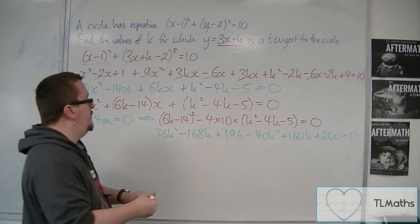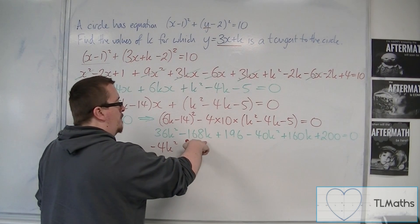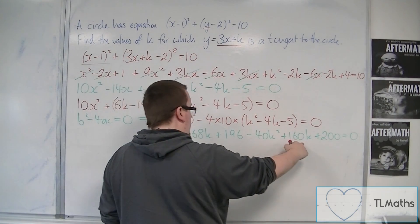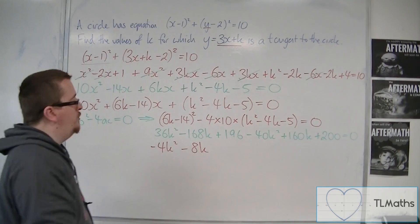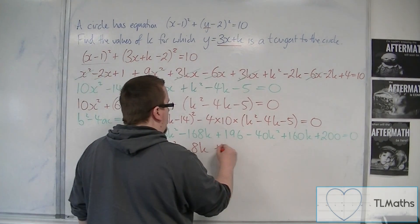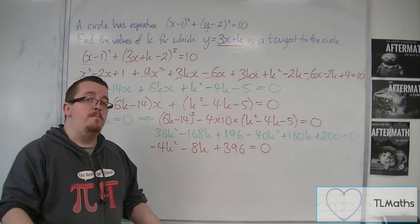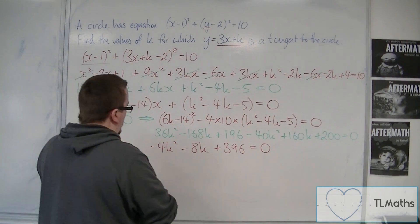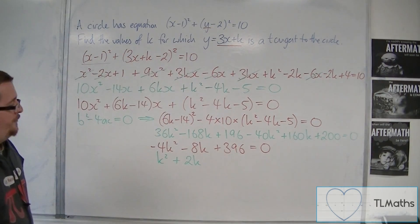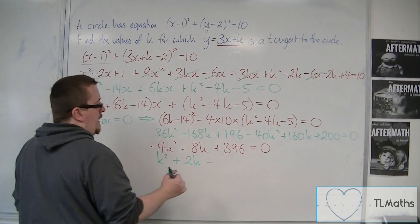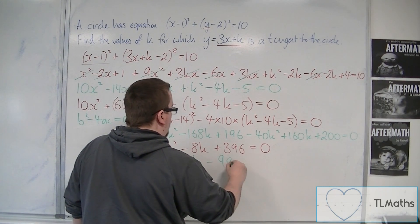Simplifying: 36k squared minus 40k squared gives minus 4k squared; minus 168k plus 160k gives minus 8k; 196 plus 200 gives 396. So we have minus 4k squared minus 8k plus 396 equals 0. Dividing everything by minus 4 gives k squared plus 2k minus 99 equals 0.